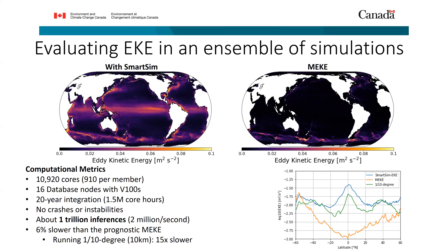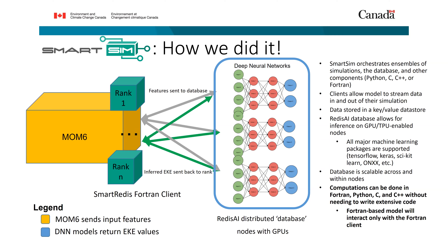That was the application side. Now I want to explain the software solution we built to actually do this — SmartSim — which is available for similar models. Essentially it coordinates ensembles of simulations, a database, and other components. The database is a Redis AI distributed database. MOM6 — the ocean model — is on the left with MPI ranks, each having a client that communicates with this database running on GPU nodes. MOM6 MPI ranks are on CPU-only nodes; the database itself runs on GPU nodes.